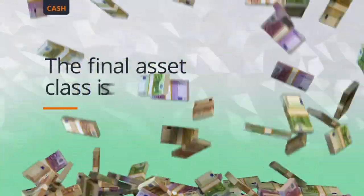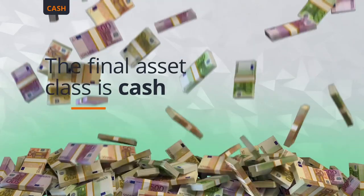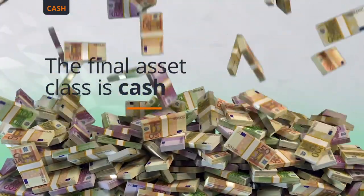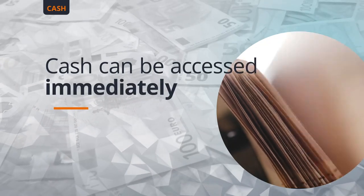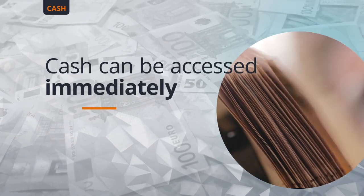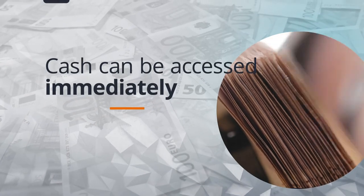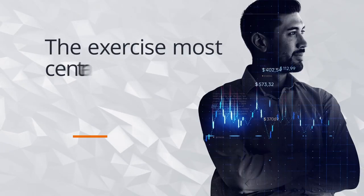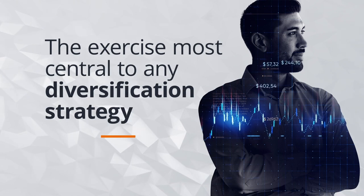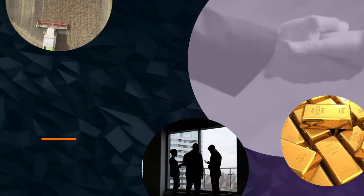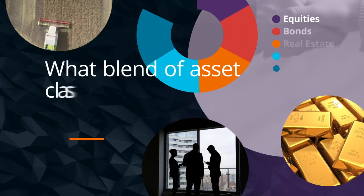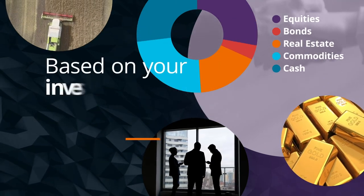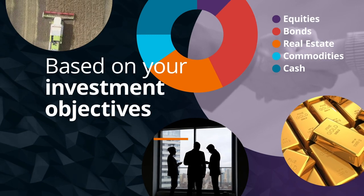The final asset class is cash, which requires little in the way of explanation. Its chief advantage is that it can be accessed immediately without the need to trade an asset in the marketplace. Asset allocation can be regarded as the exercise most central to any diversification strategy, and so it's important to think about what blend of asset classes would work best for your portfolio based on your investment objectives.